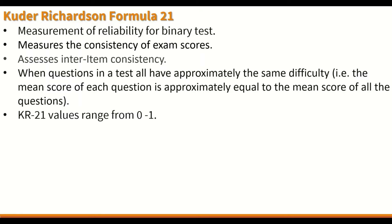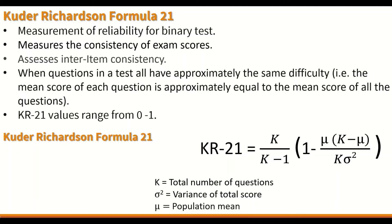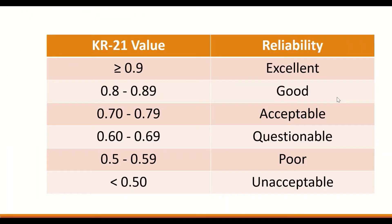The KR21 values range from 0 to 1. A value of 0 means an unreliable exam or test, while a value of 1 means excellent reliability. The Kuder-Richardson Formula 21 is: K divided by K minus 1, multiplied by 1 minus the mean times (K minus the mean), divided by K times the variance. K stands for the total number of questions, variance is the variance of the total score, and mean is the mean of the population.